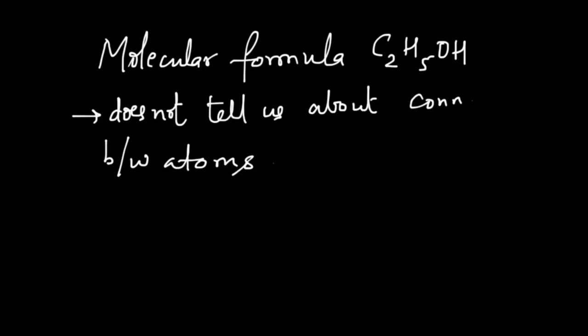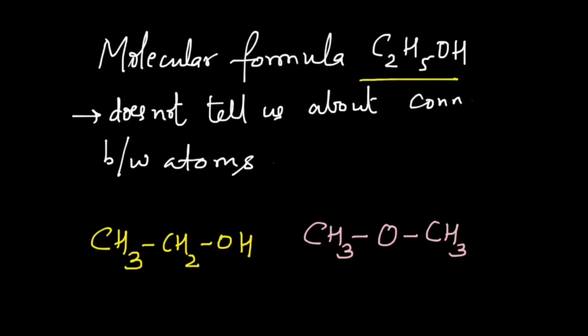So we are not sure by just looking at this formula in what way are these atoms connected. For example, this molecular formula can be for an alcohol which is ethanol, CH3-CH2-OH, and you can see that this molecule has two carbon atoms, six hydrogen atoms and one oxygen. We can also connect these atoms in a different way and we can get dimethyl ether, CH3-O-CH3.